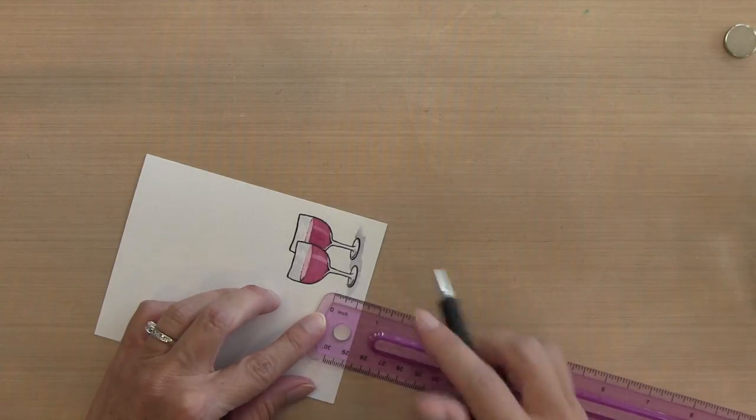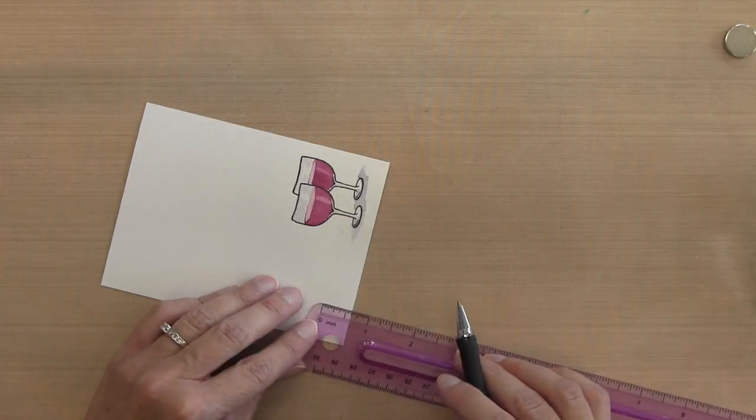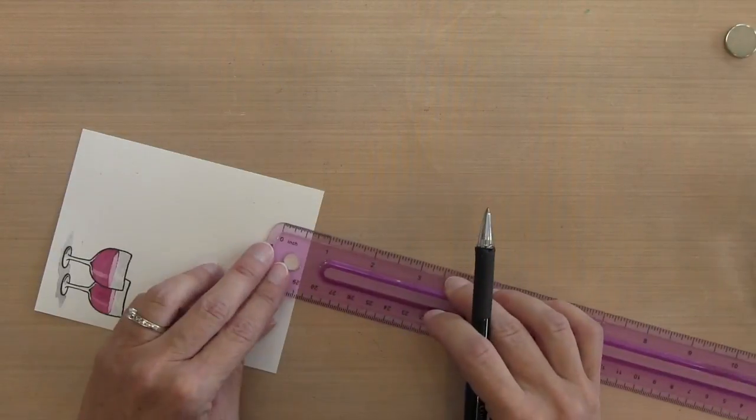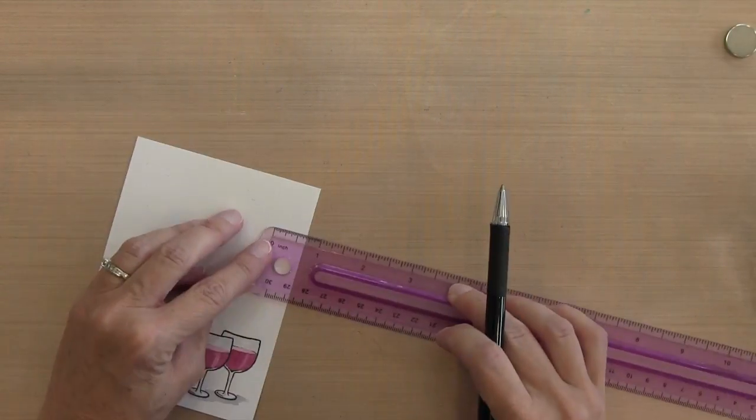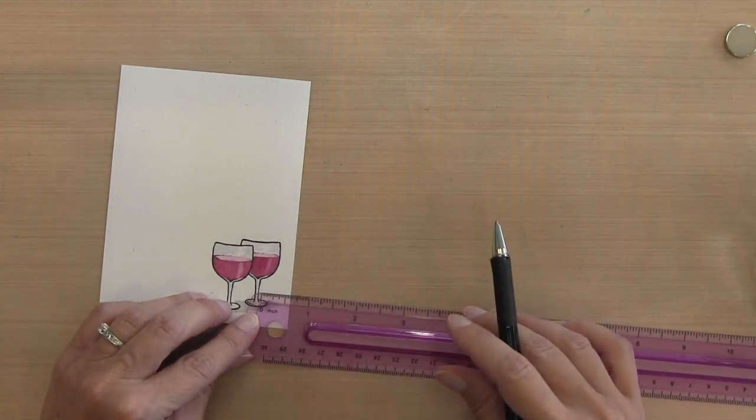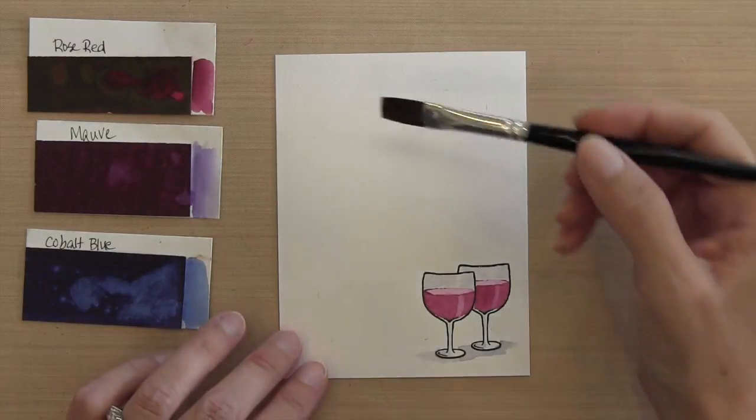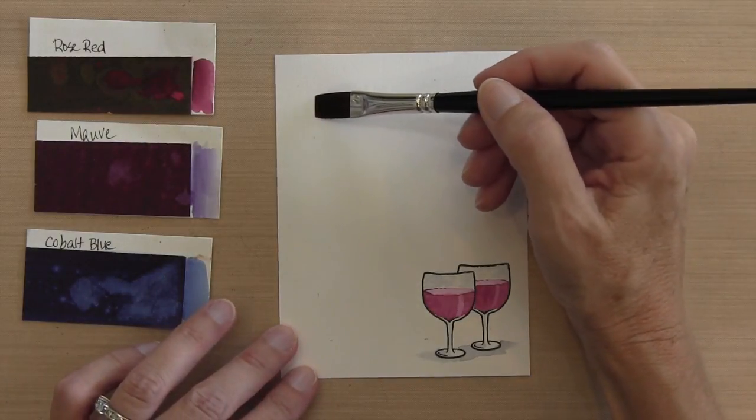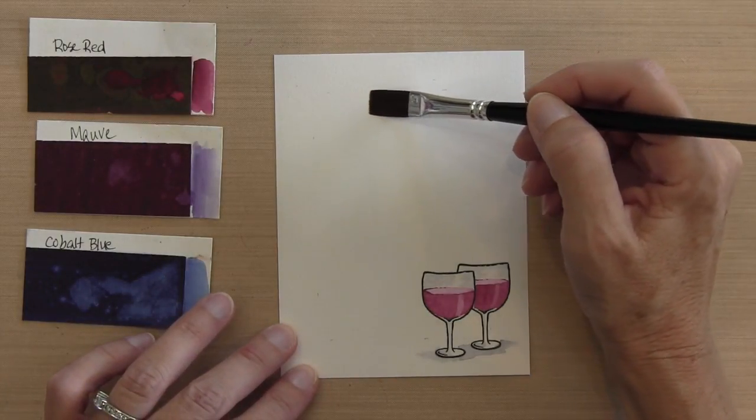I trimmed my panel down to four by five and a quarter. And now I'm marking five eighths of an inch on all sides. And this is going to be the boundary for the watercolor. Now I set five eighths because it would kind of get down into the glasses and cover them up, but only about halfway down the stem.